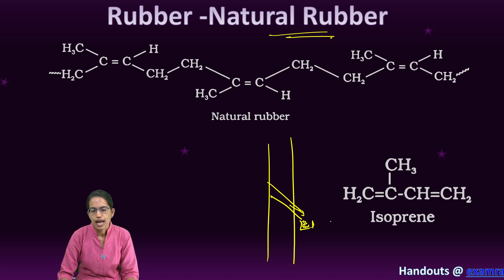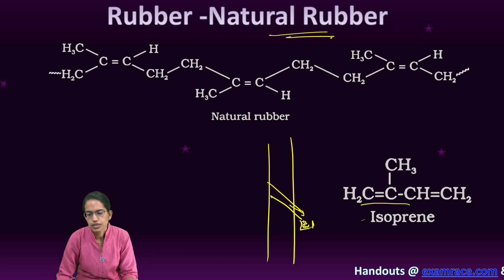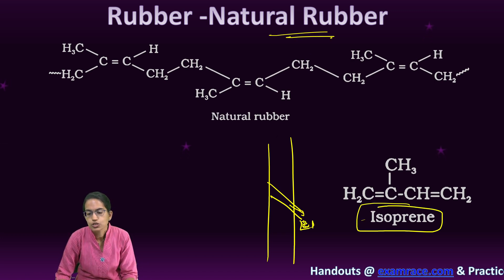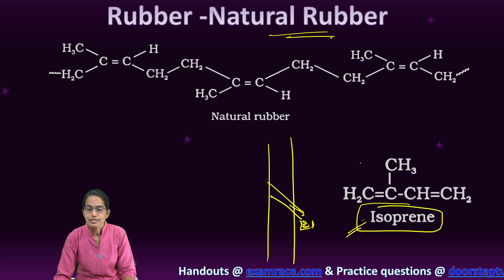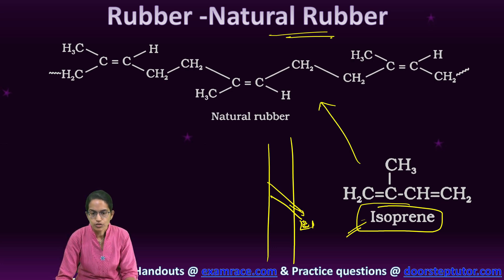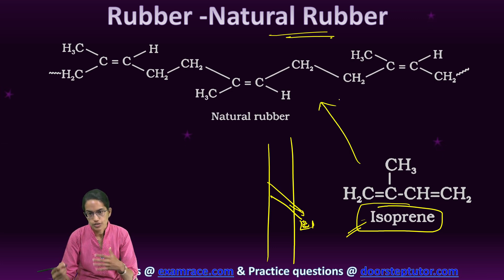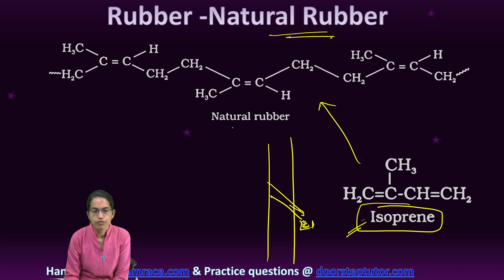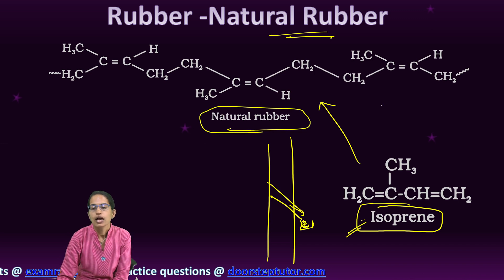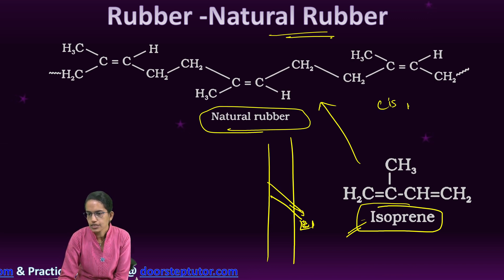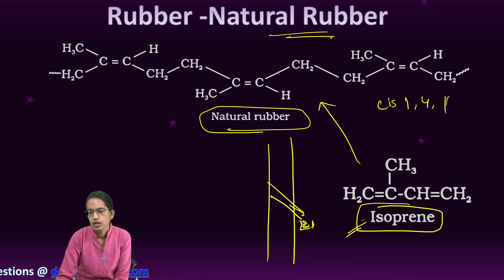Natural rubber originally has isoprene as the constituent. When there is a chain of isoprene units joining together, we have natural rubber that forms. And what is the arrangement? It is a cis-1,4 polyisoprene arrangement.